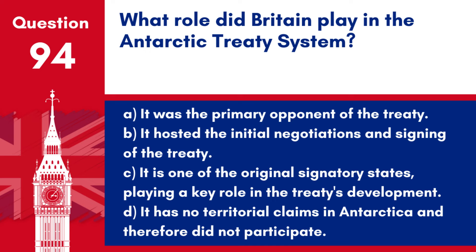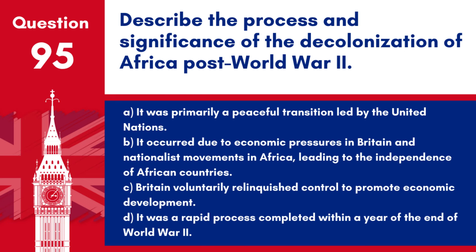Question 94. What role did Britain play in the Antarctic Treaty System? a. It was the primary opponent of the Treaty. b. It hosted the initial negotiations and signing of the Treaty. c. It is one of the original signatory states, playing a key role in the Treaty's development. d. It has no territorial claims in Antarctica and therefore did not participate. Answer: c. Britain played a significant role in the Antarctic Treaty System, being one of the original signatory states and contributing to the Treaty's development.